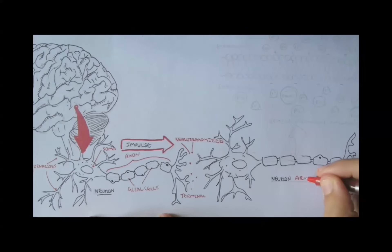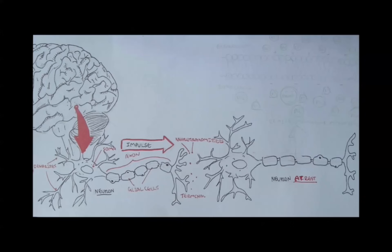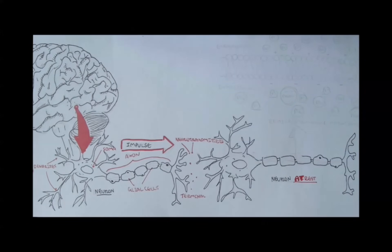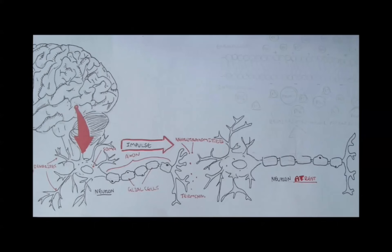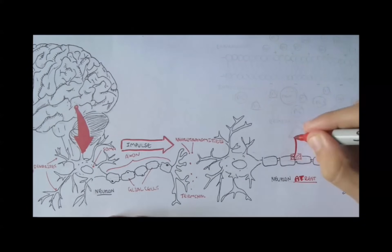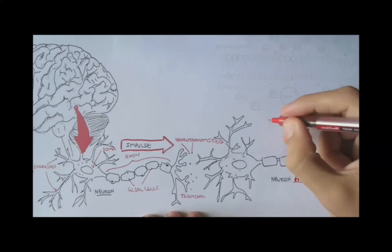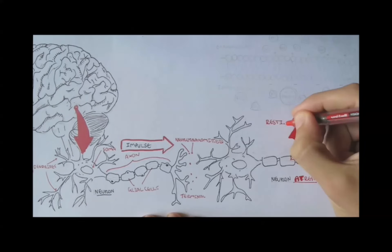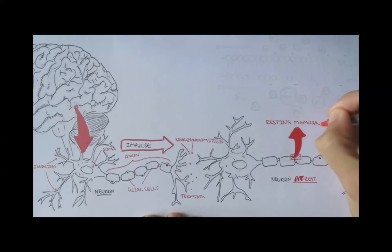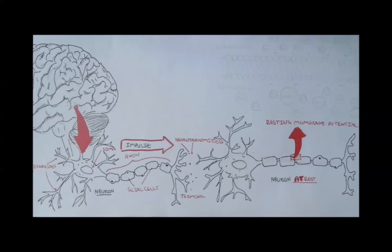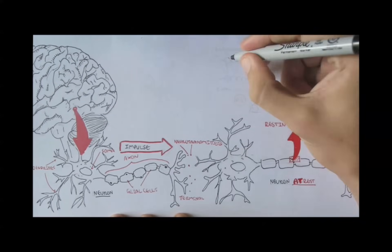So here is another neuron with a dendrite, soma, axon, and terminal. Because this neuron has not received the signal yet, it is called a resting neuron, whereas the first neuron was an excited neuron. Now let's cut a cross section along the resting neuron's axon and see how the membrane looks like at rest — the resting membrane potential.